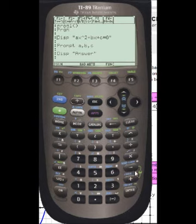And the first thing you want to do is go to display, and enter A, well open quotes, AX squared plus BX plus C equals 0.